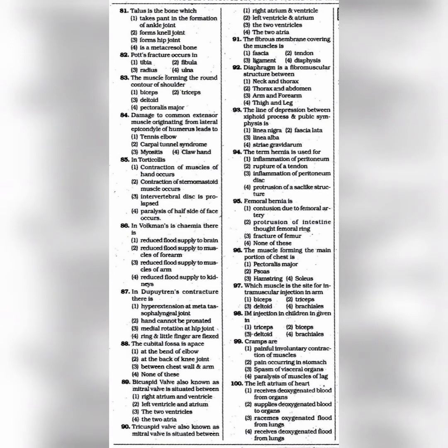Question 88: The cubital fossa is a space — the answer is: At the bend of the elbow. Question 89: Bicuspid valve, also known as mitral valve, is situated — the answer is option 2: Between the left ventricle and left atrium.